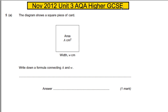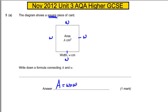Question five: the diagram shows a piece of card. Write down the formula connecting A and W. It's a square piece of card, so the area must be the width times the length. Because it's a square, this side is W on all four sides, so the area must be equal to W times W. The preferred way to write it is: the area is equal to W squared.